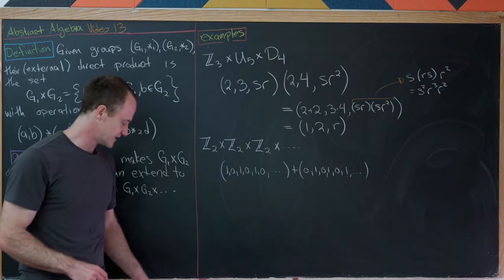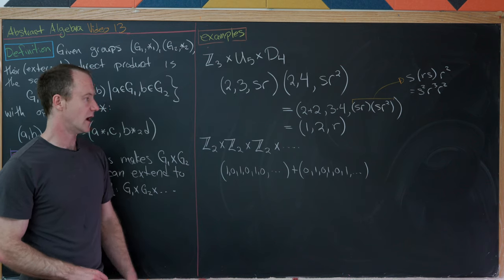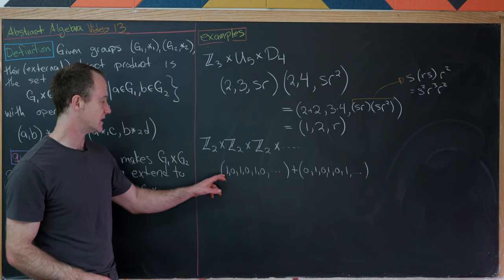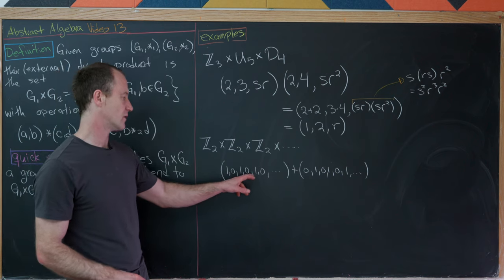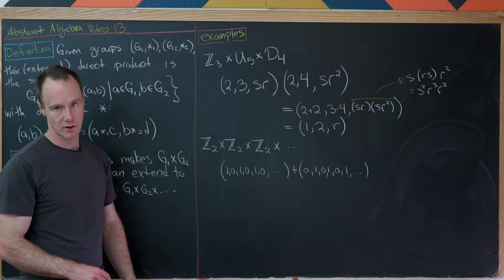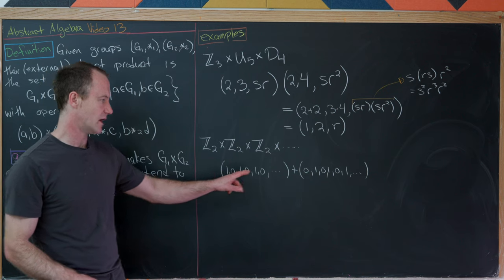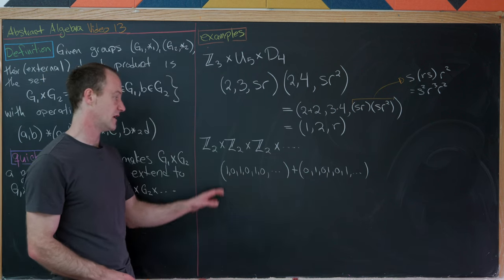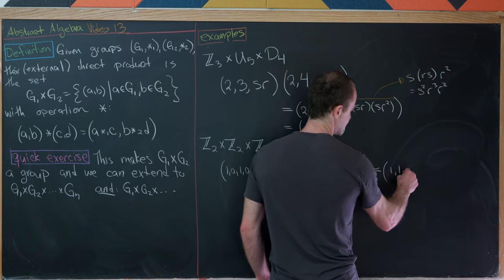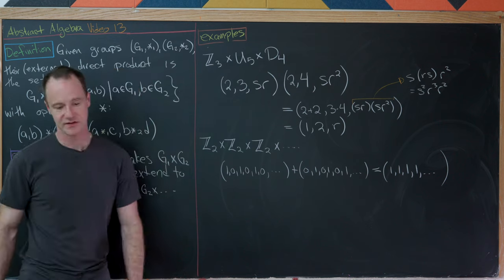As another example, consider infinitely many copies of Z2. Adding the alternating sequence 1,0,1,0,1,0,... to the alternating sequence 0,1,0,1,0,1,... — since every entry where one has a 1 the other has a 0 — clearly adds to the all-ones sequence.